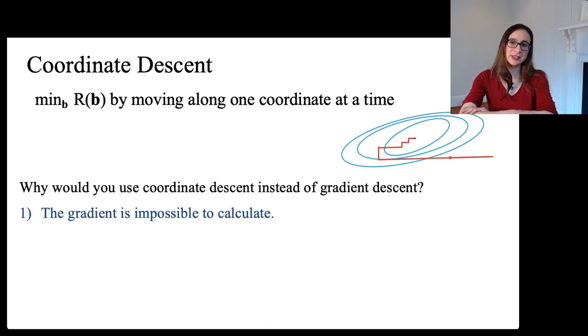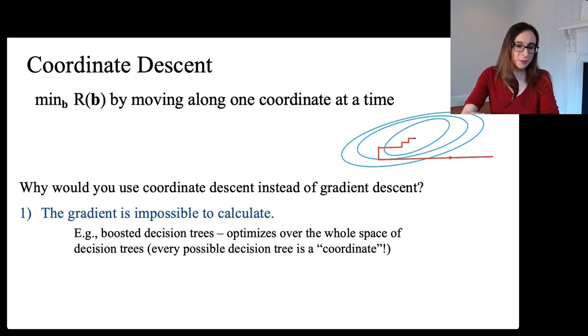The first reason is if the gradient is impossible to calculate. I've given you an example, which is boosted decision trees. Boosted decision trees optimizes over the entire space of all possible decision trees. Now that space is enormous, and so since you cannot possibly enumerate all of the whole space, then you cannot do gradient descent because you can't calculate the gradient.